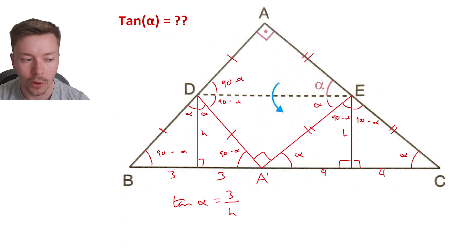Now the second equation we get from the bottom right triangles. You can see either of those ones, A apostrophe E and then dropping the perpendicular, or EC and then the perpendicular line, you get tan alpha is H over four.